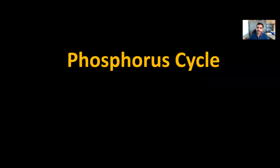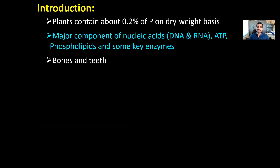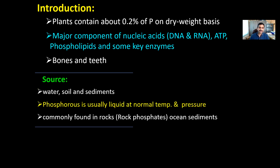Starting with the phosphorus cycle introduction: phosphorus is a major plant nutrient, next only to nitrogen. Plants contain about 0.2% of phosphorus on a dry weight basis. Phosphorus is a major component of molecules like nucleic acids, ATP, and phospholipids, which are the major units that form the cell membrane. Phosphorus is also a component of the majority of enzymes and is even a building block of certain parts of the human and animal body such as bones.